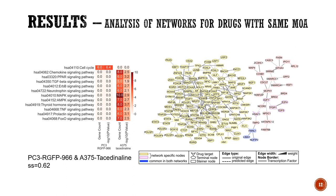Another example is drugs with the same mechanism of action but having distant networks, which is a false negative case. Tasedinoline and RGFP966 are both HDAC inhibitors but they have different affinities to different HDAC proteins. RGFP966 and tasedinoline networks in different cell lines are generally distant to each other with positive separation scores. These results revealed that when the selectivity for a specific target increases, separation between networks also increases and different signaling pathways are modulated.